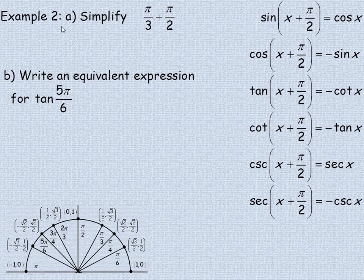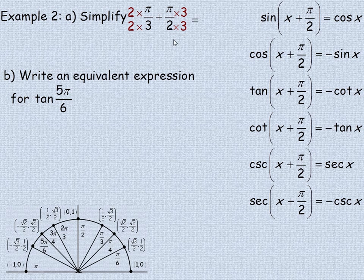In example 2a, we're going to simplify pi over 3 plus pi over 2. So it's an angle plus pi over 2. We need a common denominator, so we multiply pi over 3 by 2 top and bottom, and pi over 2 by 3. That gives us 2 pi over 6 and 3 pi over 6, which adds to 5 pi over 6.